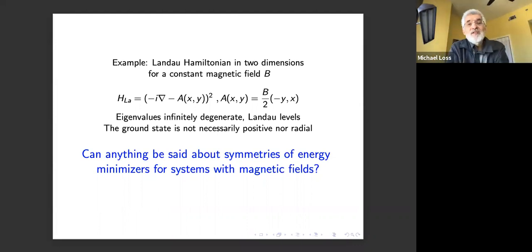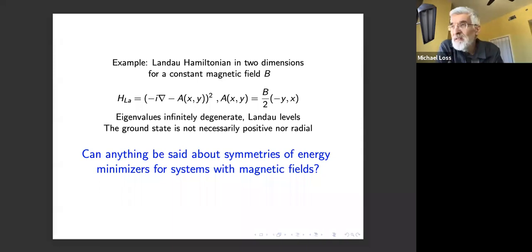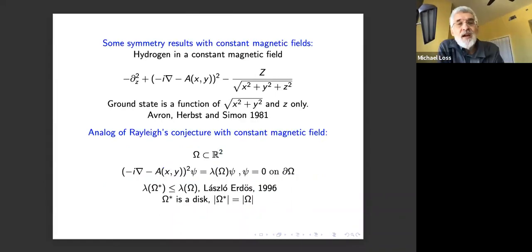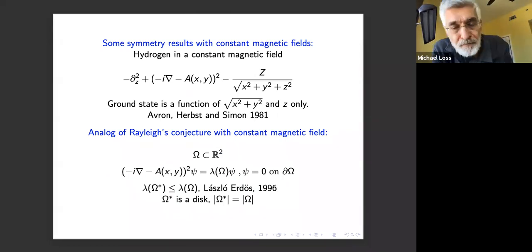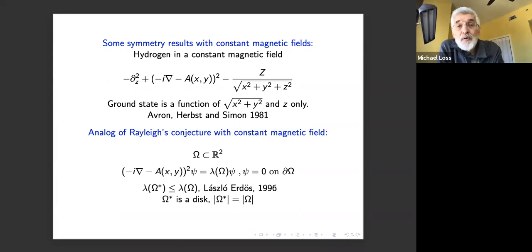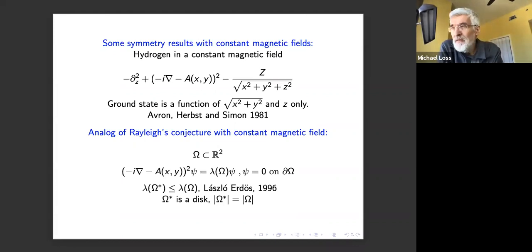My general question about magnetic fields: can you say anything about symmetries of energy minimizers for systems with magnetic fields? A deep result by Avron, Herbst, and Simon (1980–81): for a hydrogen atom in a constant magnetic field pointing along the z-axis, they prove the ground state wave function is a function only of sqrt(x²+y²) and z — axial symmetry. The proof is very tricky and non-trivial.